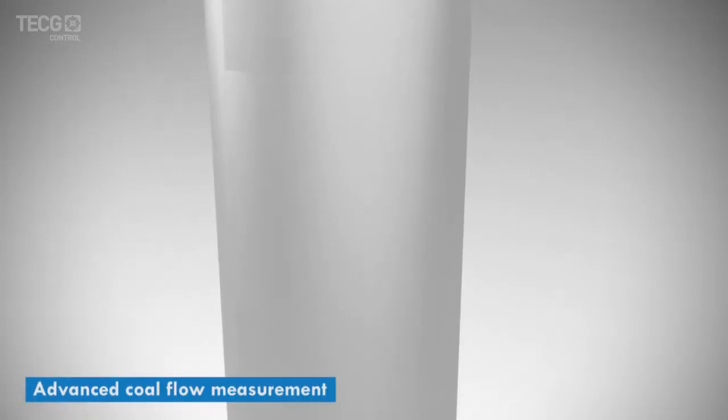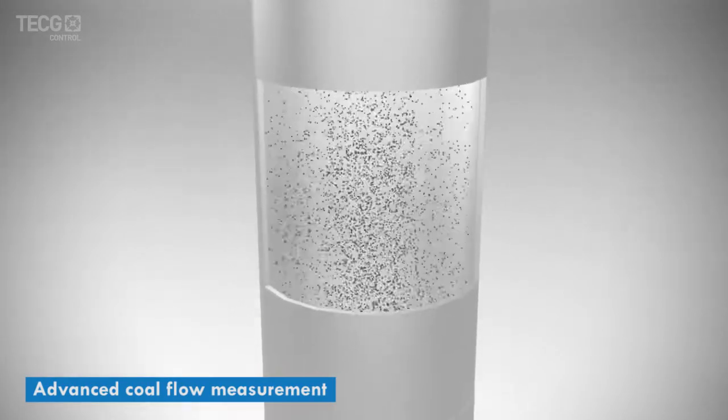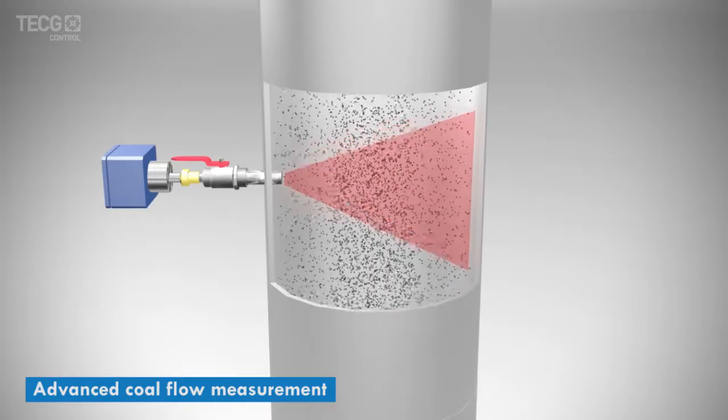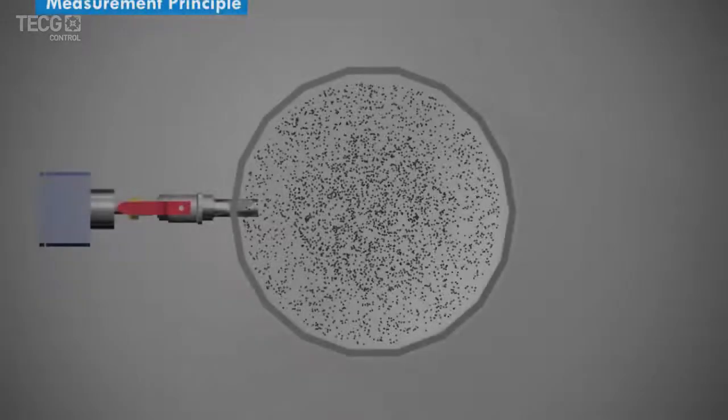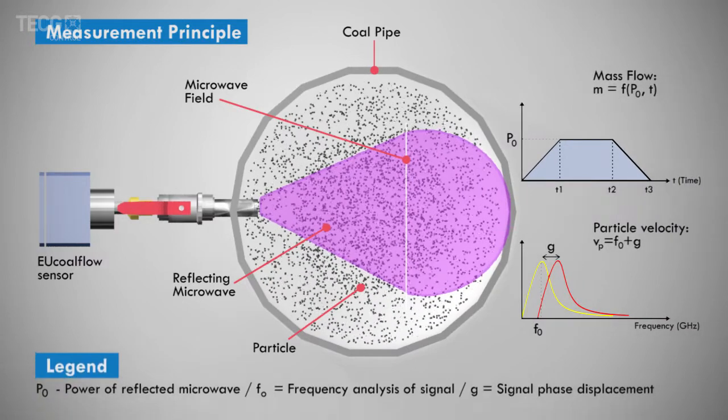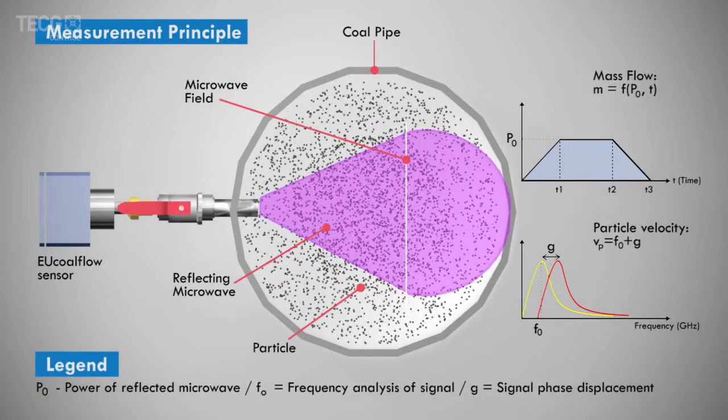With advanced measurement technology and a patented algorithm, TECG is providing the advanced coal flow measurement system by utilizing a microwave sensor. The system is drift-free and independent from pressure and temperature in a wide range.